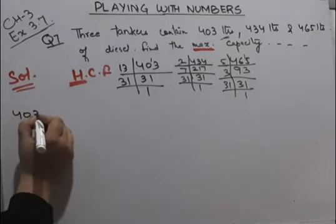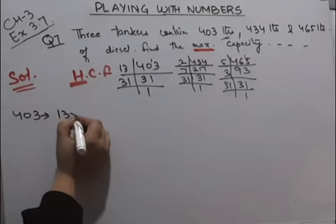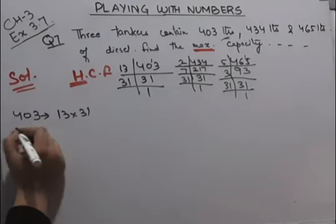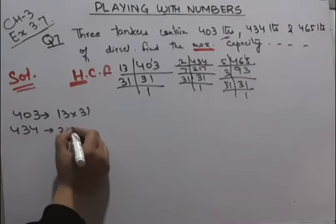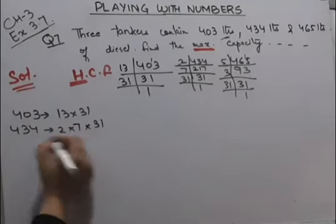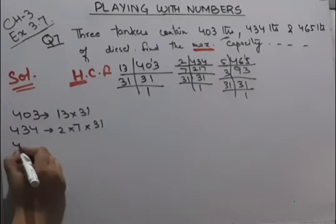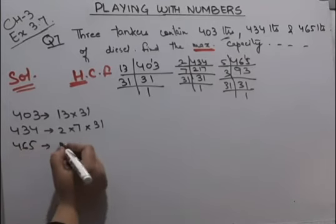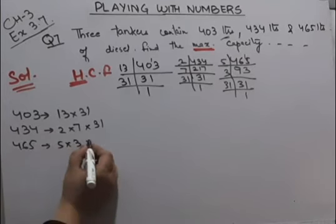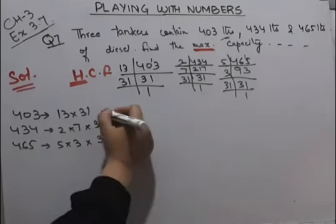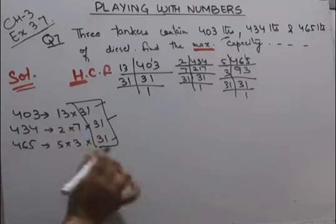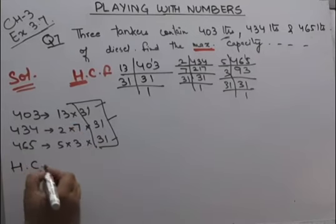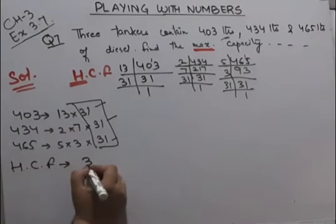Now the factors of 403 will be 13 into 31. Factors of 434 will be 2 into 7 into 31. Now the factors of 465 will be 5 into 3 into 31. So here we can see 31 is coming in all 3 of them. We don't have any other common factor. So the HCF will be 31.